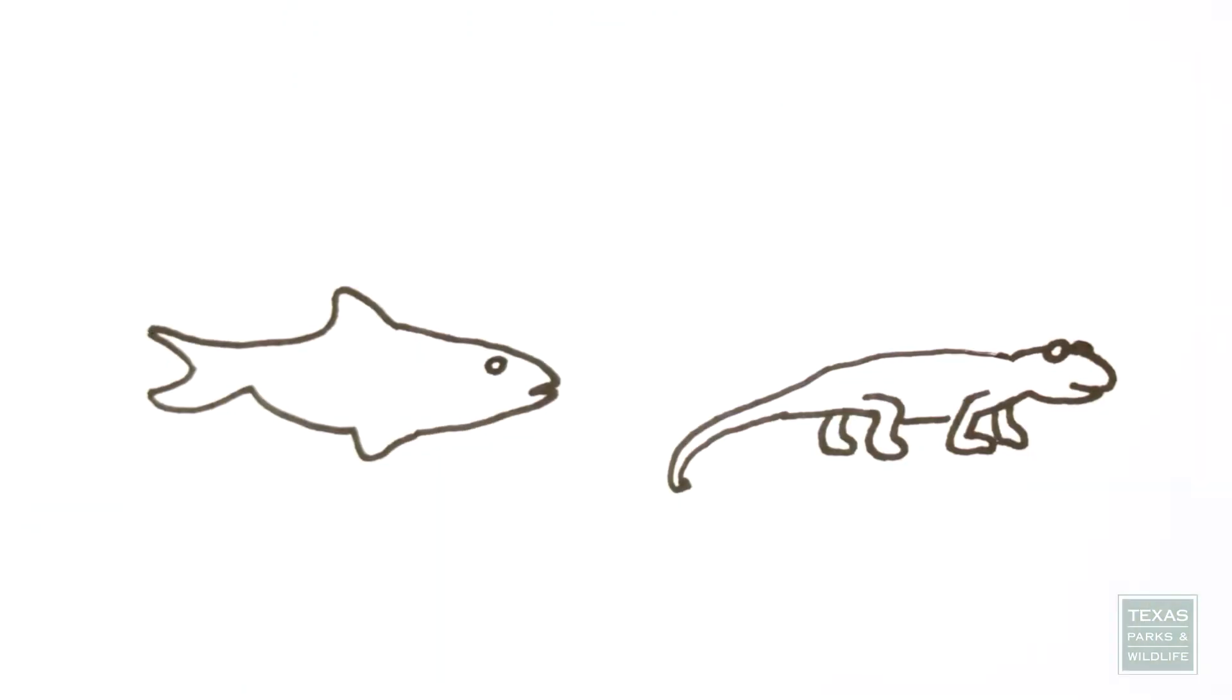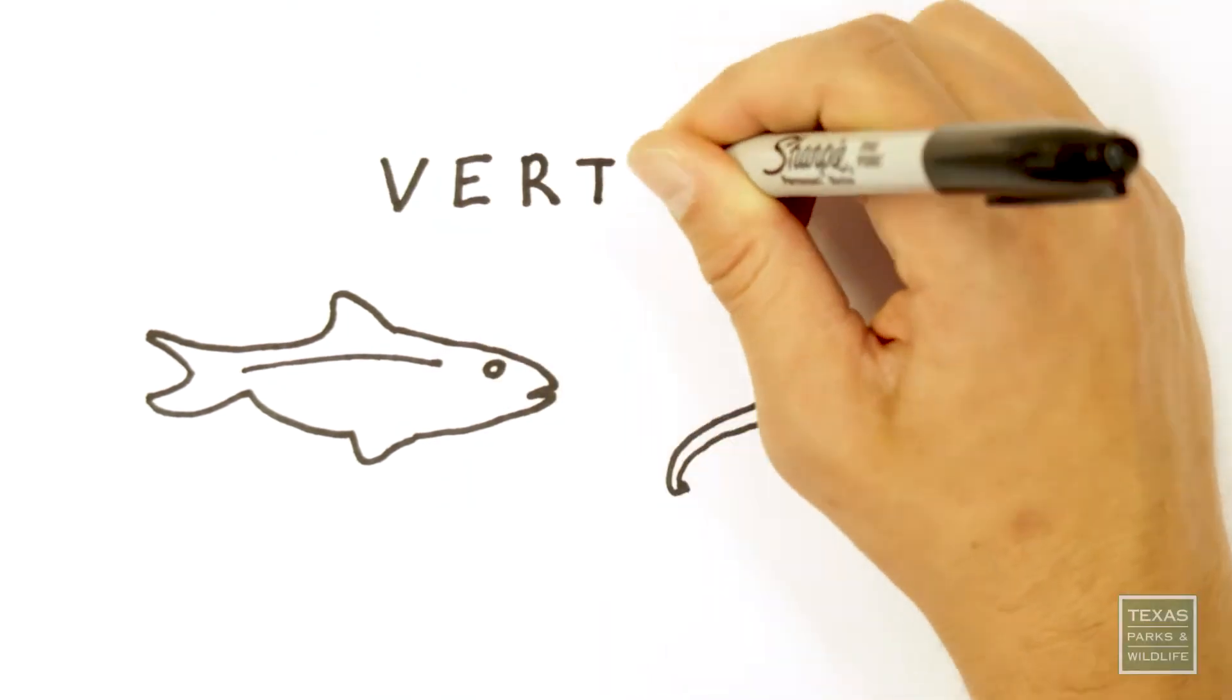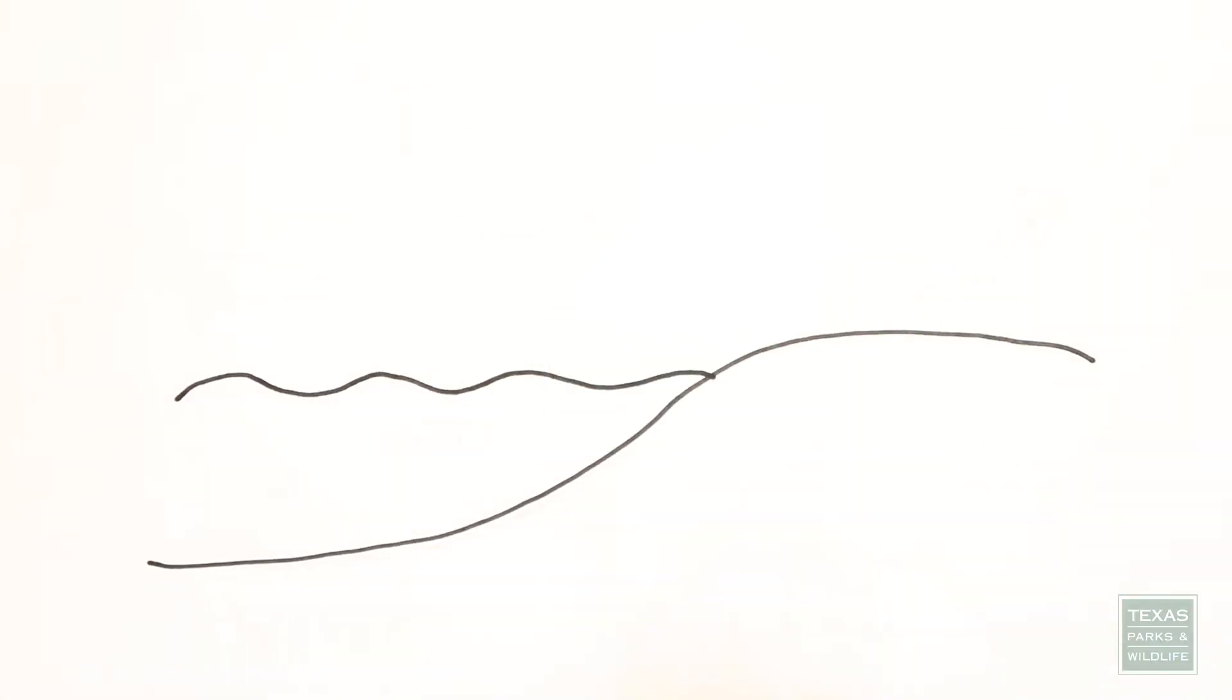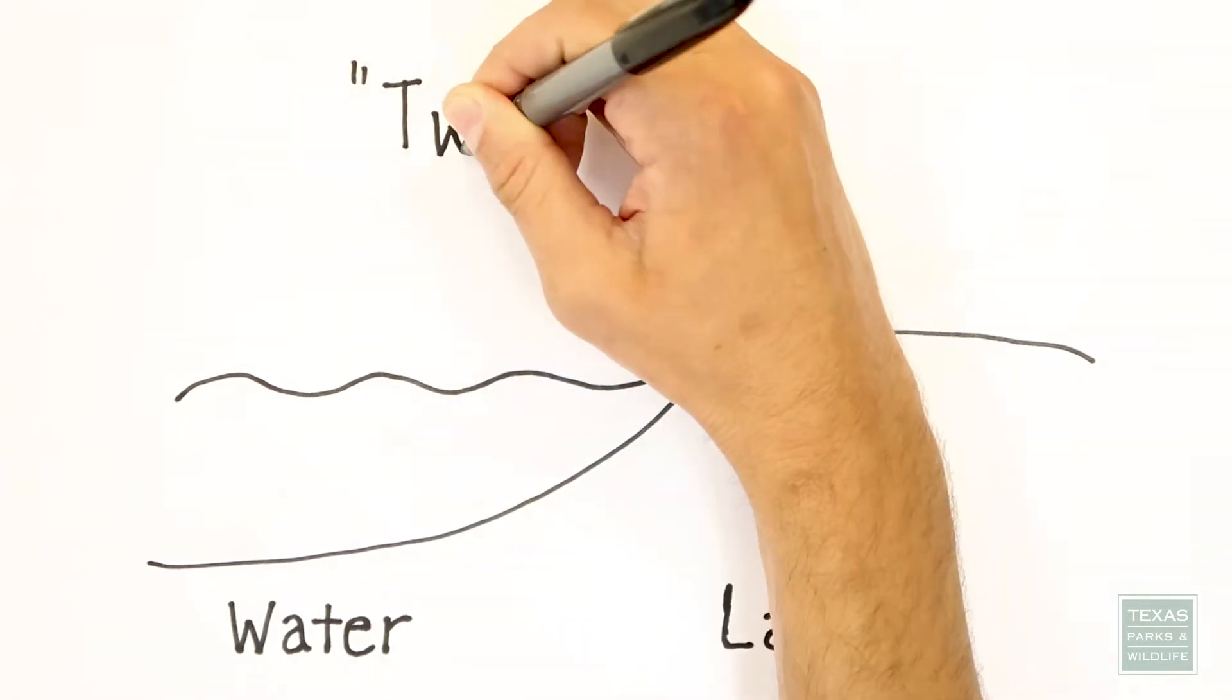Amphibians were the next animals after fish to have a backbone, or vertebrae. Unlike fish, which spend all of their life in water, amphibians live their lives in two stages, one in water and one on land. In fact, the word amphibian itself means two lives.